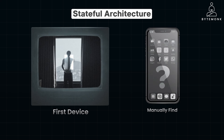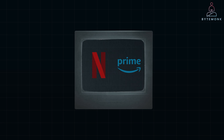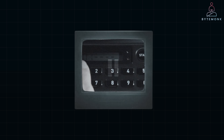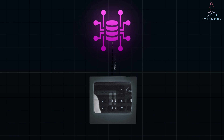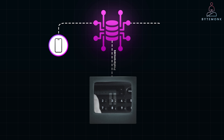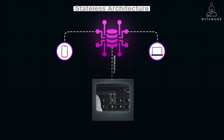Now, think about how modern streaming services like Netflix or Amazon Prime Video work. You can start watching a movie on your TV, pause it, and then later pick up right where you left off on your phone, laptop or any other device. The system doesn't rely on the specific device to store your progress. Instead, it sends your watch history and preferences to a central server that any device can access. This is stateless architecture.